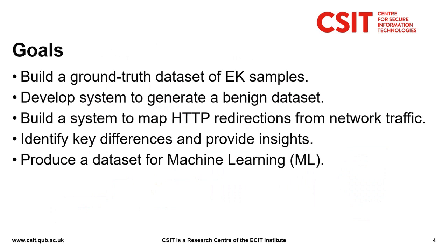There were several goals to this experiment. The first was to build a ground truth dataset of exploit kit samples through manual analysis that could be reused in future experiments. We also wanted to develop a new system to generate a benign dataset that we could later couple with a honeypot in future experiments. The key component of the experiment was to build a system to map HTTP redirections from network traffic and extract features. Using this system we wanted to identify any inherent differences between benign and malicious redirections and provide insights into the history of exploit kits and how the structures and methods of redirections and evasion techniques have evolved. Finally, we wanted to use the system to extract, combine, and store features that we could use for future machine learning-based research.